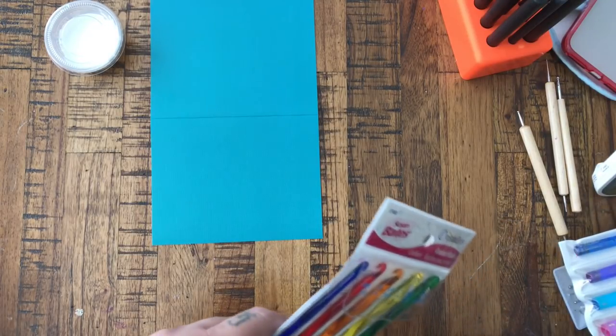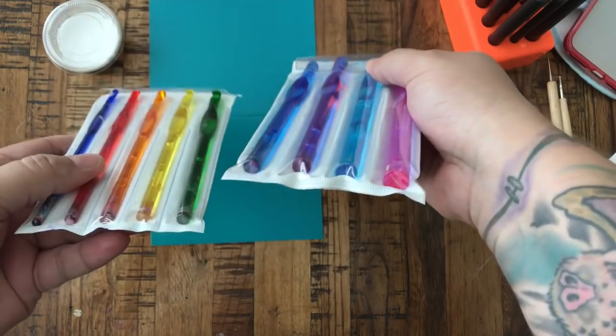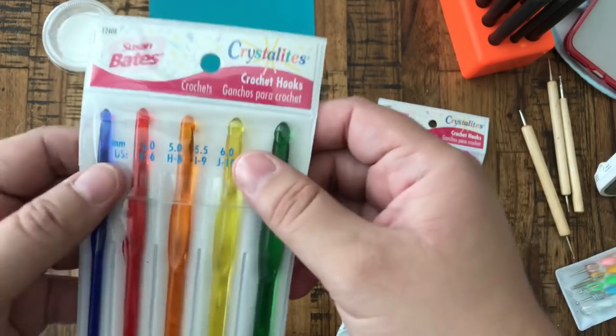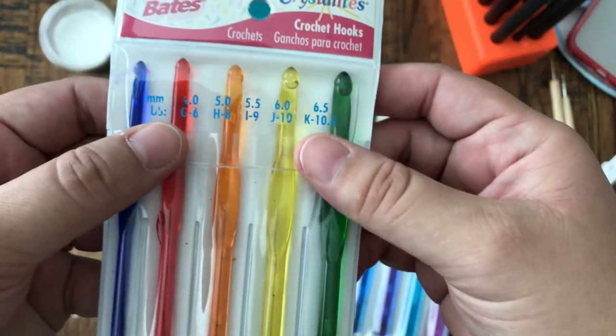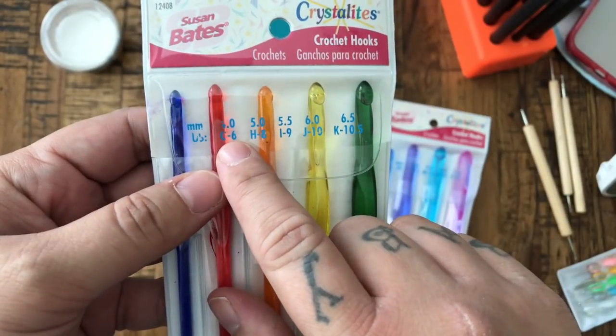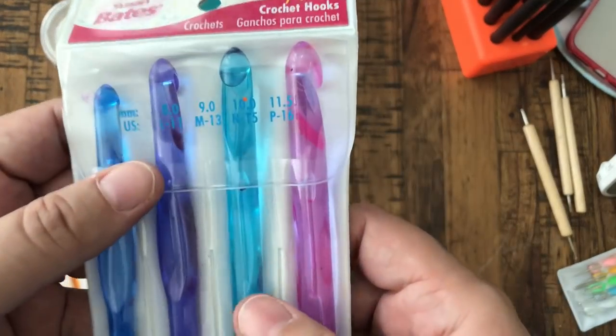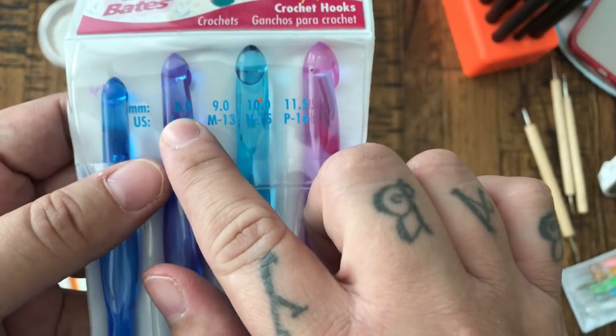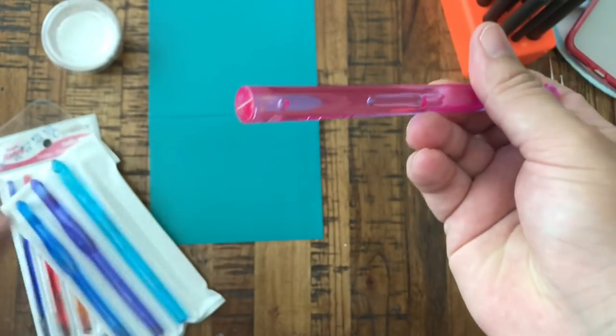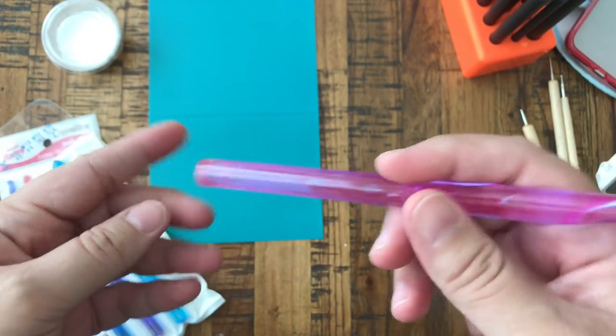So when I first started, I started using these Susan Bates Crystallites flat bottom crochet hooks and they work really well. They come in, not sure if you guys can see that, I've definitely worn off some of these prints, they come in a 4.0, 5.0, 5.5, 6.0, 6.5, these are millimeter sizes you guys.